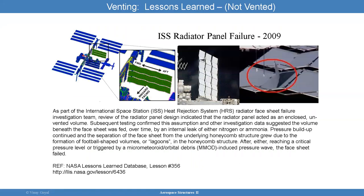The ISS radiator panel failure in 2009 — you can see it in the NASA Lessons Learned Database. Pressure buildup continued over time until the fascia came out and it propagated between the fascia and the core. This is something to be considered when developing designs — be mindful of understanding the quality of the fascia-to-honeycomb bond and the limits of your design, whether vented or unvented.